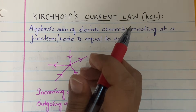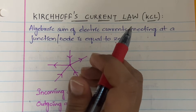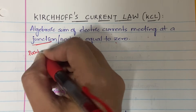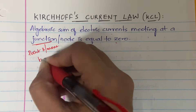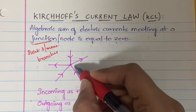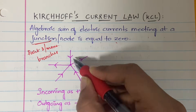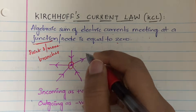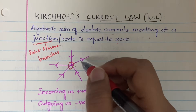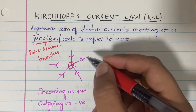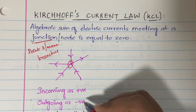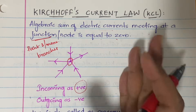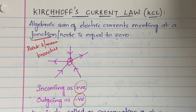A junction is a point where three or more branches will meet. A branch is an individual path between two nodes. At a particular junction, whatever currents are meeting, their sum should be equal to zero. Whatever currents are coming into the junction are considered as positive, and whatever currents are leaving the junction — the outgoing currents — are considered as negative.